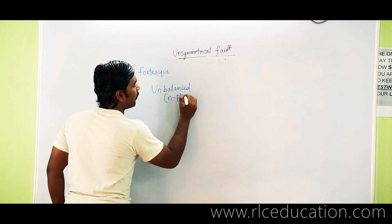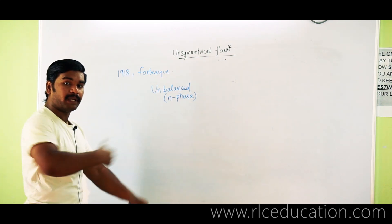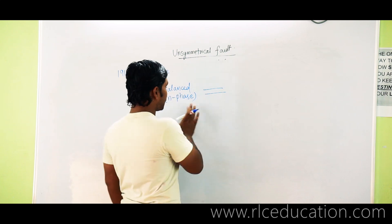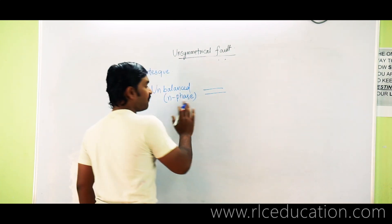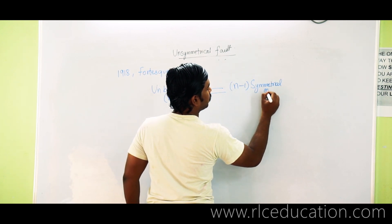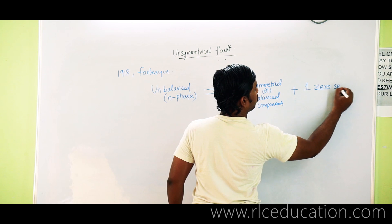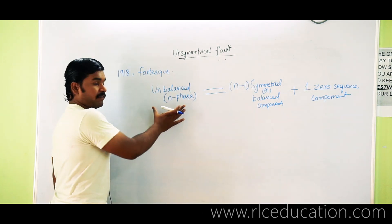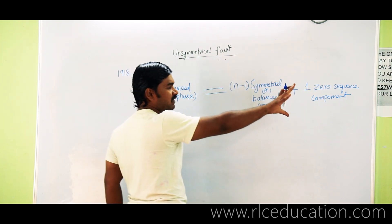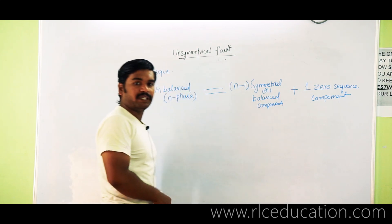An N-phase unbalanced system can be split into N minus one symmetrical or balanced components plus one zero sequence component. So for a three-phase unbalanced system, there will be two balanced three-phase components — called positive sequence and negative sequence — plus one zero sequence component.